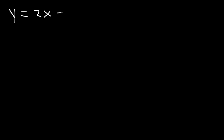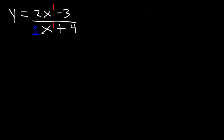Now what about 2x minus 3 divided by x plus 4? The degree of the numerator is the same as that of the denominator, so it's neither top-heavy nor bottom-heavy. In a situation like this, divide the leading coefficients: 2 divided by 1 is 2. Therefore, the horizontal asymptote is y is equal to 2.